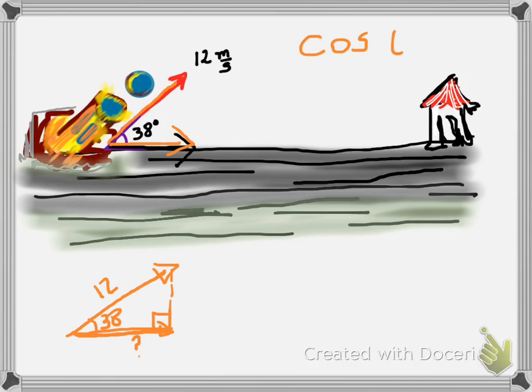Because cosine of the angle equals the adjacent, which in this case happens to be the x component of the velocity, divided by the hypotenuse. So I'm going to write it down over here.